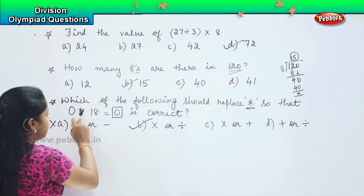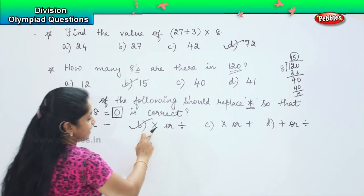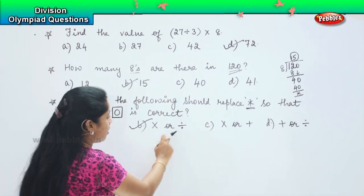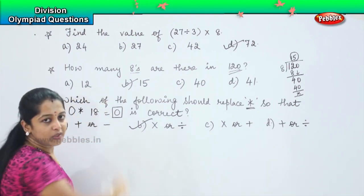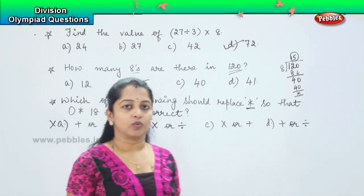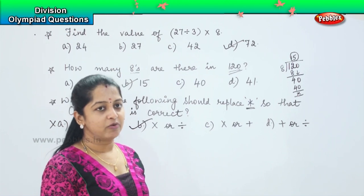So here, this asterisk can be replaced with a into sign or a division sign which will give me the answer 0. Clear children? Shall we move to the next one?